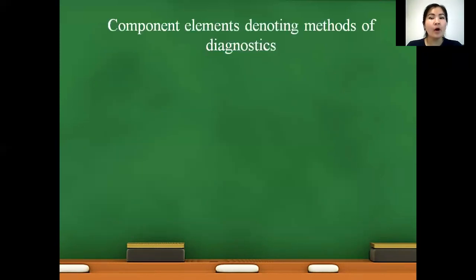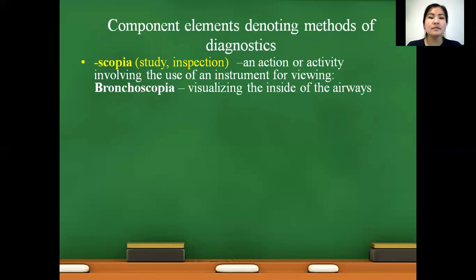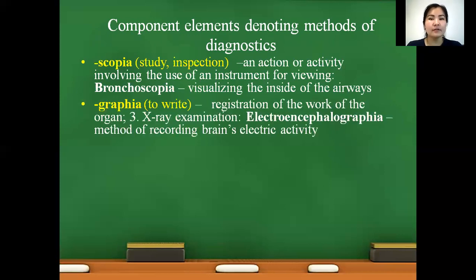Next, component elements denoting methods of diagnostics. Scopia — meaning study, inspection, visualizing. For example, bronchoscopia: visualizing the inside of the airways. Graphia — meaning to write — has two meanings: registration of the work of an organ, and x-ray examination. Example: electroencephalographia — method of recording the brain's electric activity.